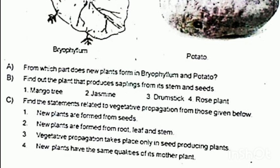Correct statement: New plants are formed from seeds. Seeds are not the only way — new plants are also formed from root, leaf, and stem. Vegetative propagation takes place only in seed-producing plants. New plants have the same qualities as the mother plant.